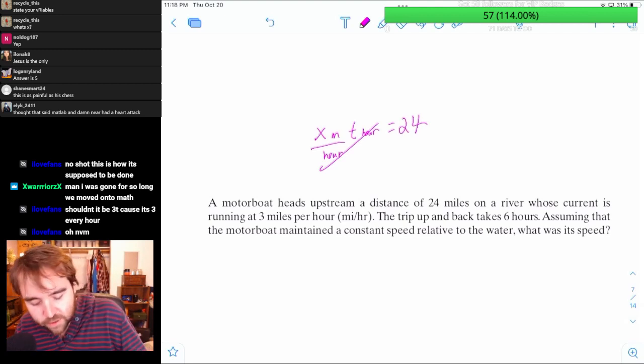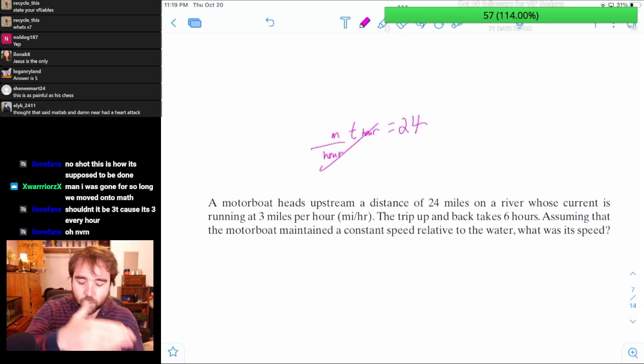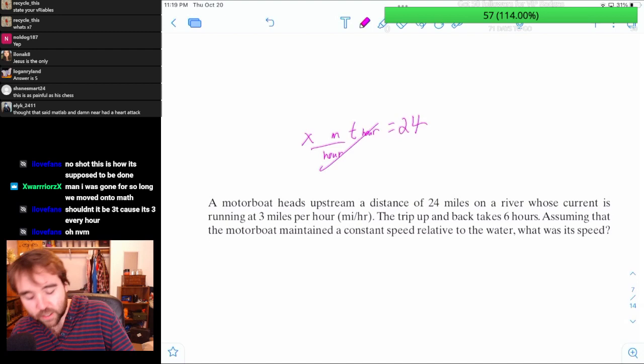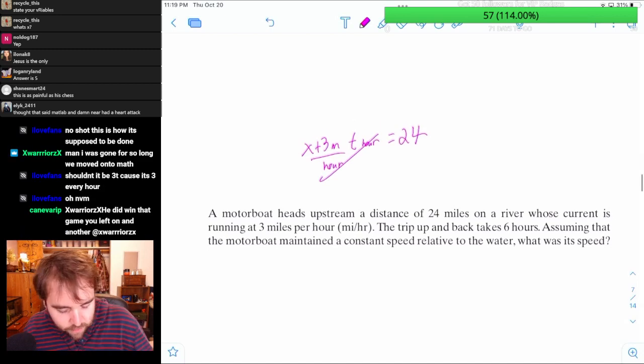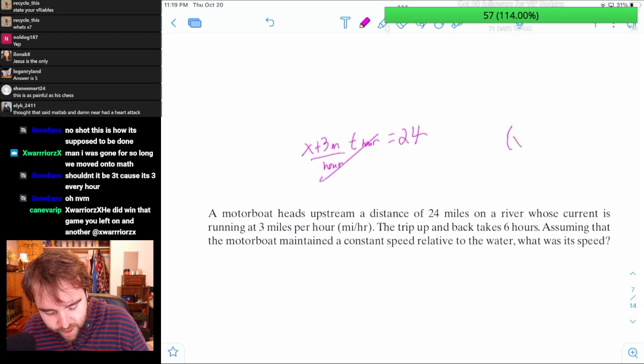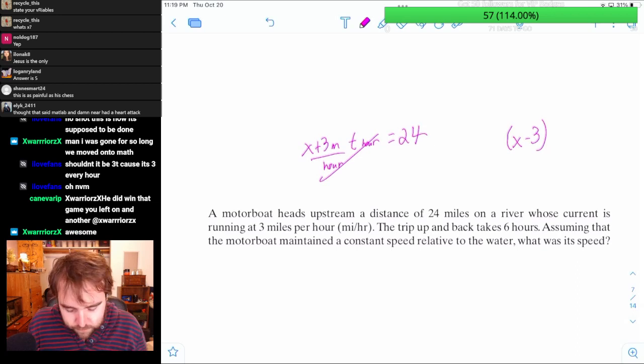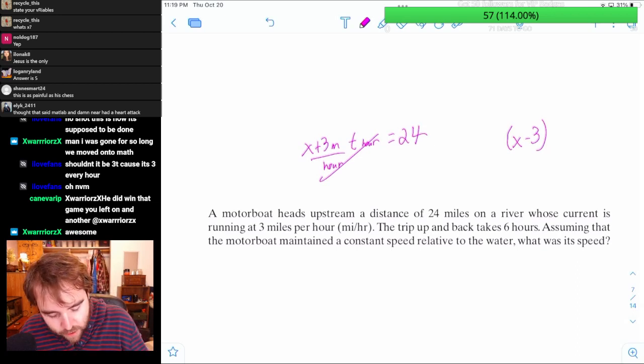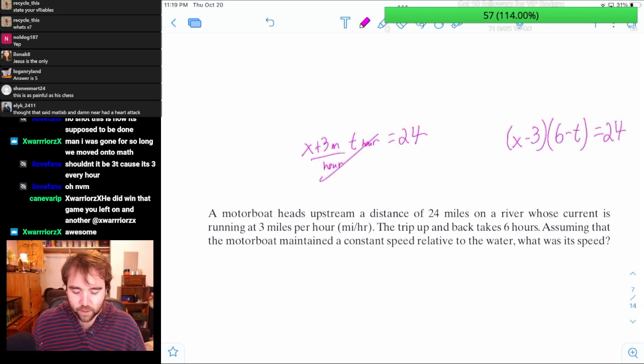But here's the thing, this is not just X because there's a current. So when I'm going one way, I'm going X plus the 3 miles an hour, and that's how I'm going to get the 24. But then on the other side, I'm going X minus 3 miles an hour. How long am I going? I'm not going the full T because I'm doing the 6 hours minus how long it took that time. And that should also get me 24 miles.